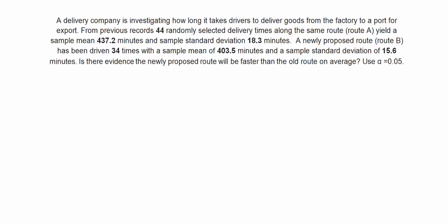A newly proposed route, route B, has been driven 34 times with a sample mean of 403.5 minutes and a sample standard deviation of 15.6 minutes. Is there evidence the newly proposed route will be faster than the old route on average? Let's calculate a two-sample t procedure using an alpha or significance level of 0.05.